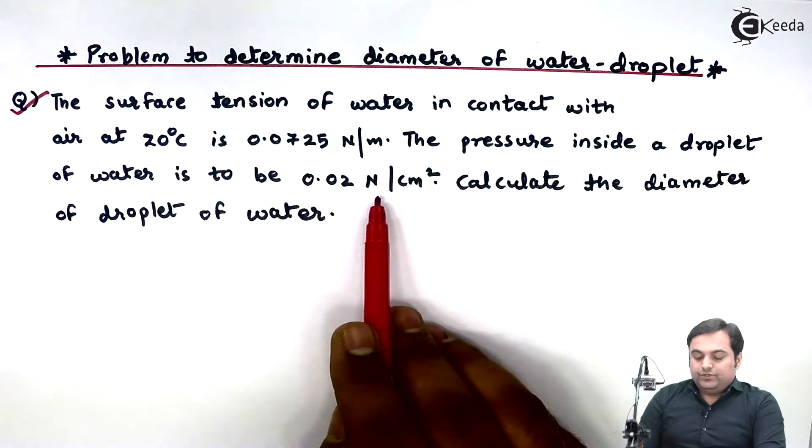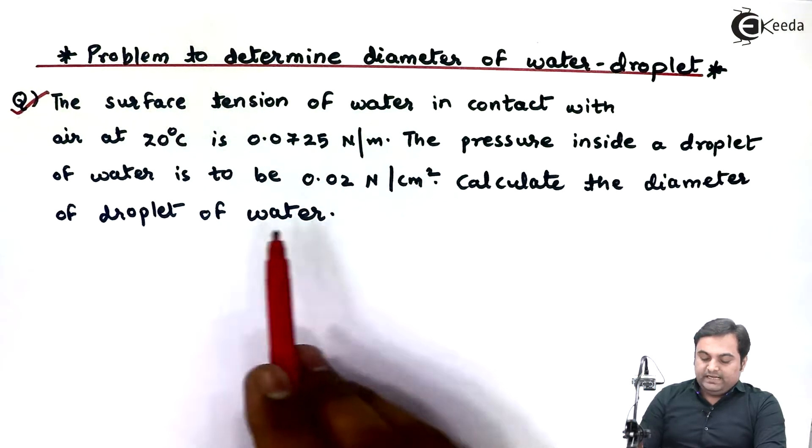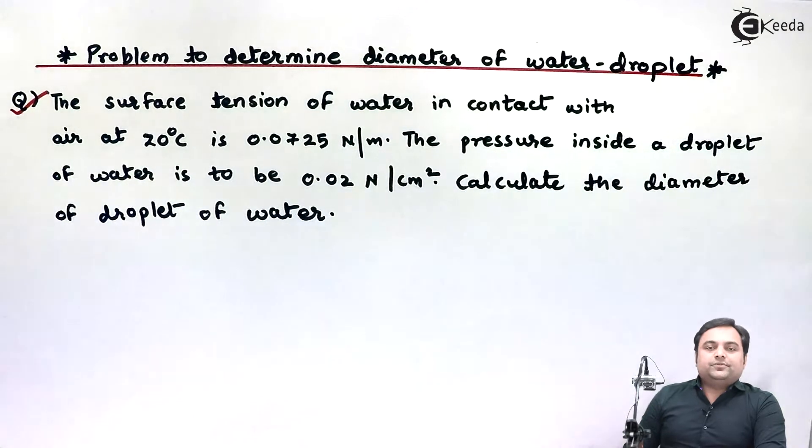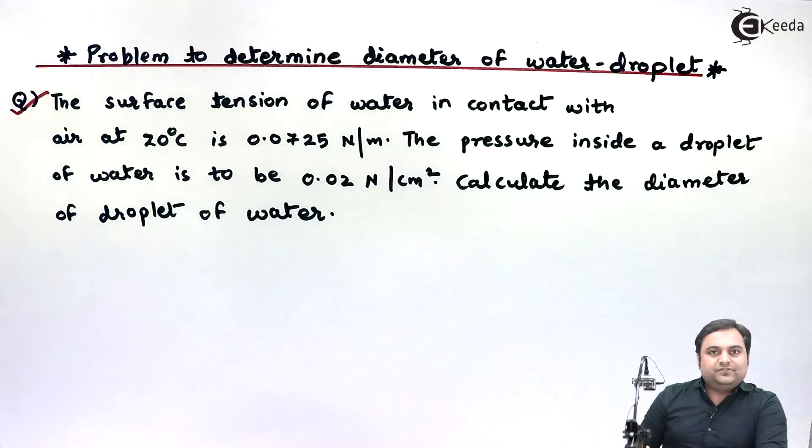0.02 Newton per centimeter square. Calculate the diameter of droplet of water. Now this is the question. Whatever is given here I will write in the form of data first, so let us start with this problem.